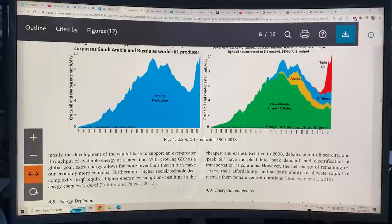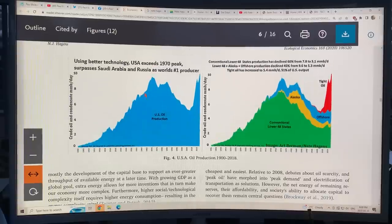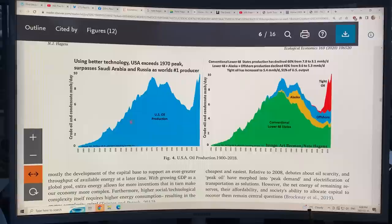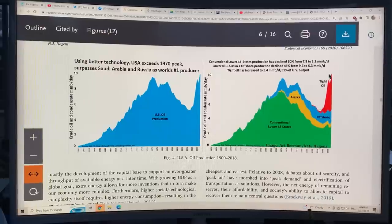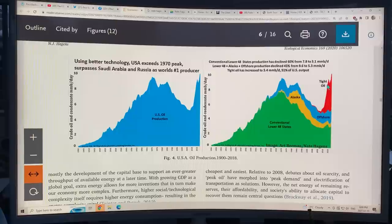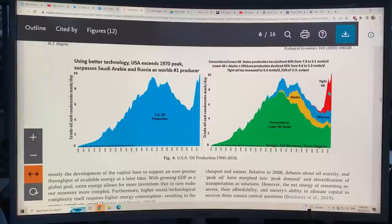With growing GDP as a global goal, extra energy allows for more inventions that in turn make our economy more complex, resulting in an energy complexity spiral. Like here's better technology in the US. Here's US oil production peaked in the 70s, dropped significantly, and then surpassed the peak. Why? Well, here's conventional oil. This is Alaska development. This is offshore oil. And look at tight oil, like oil from rock, fracked oil.